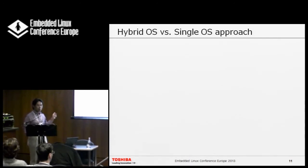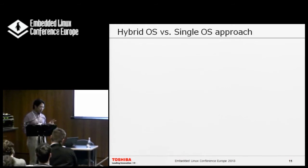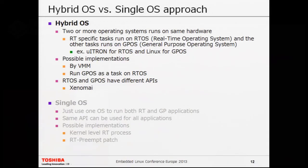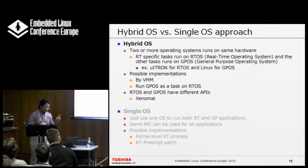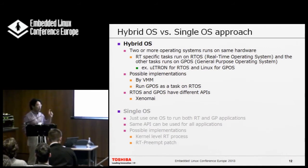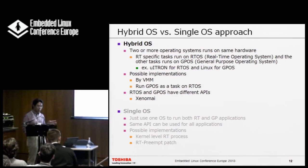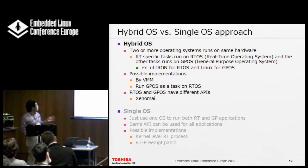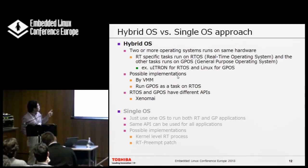We'd like to make it simpler — only one hardware able to control both real-time and general-purpose applications. The system software that can control both is either an operating system or a virtual machine monitor. There are two approaches: the hybrid OS approach and the single OS approach. In the hybrid OS approach, two or more operating systems run on the same hardware. One runs real-time specific tasks on a real-time OS, and general-purpose tasks run on a general-purpose OS. Currently we use MicroITRON for the real-time OS and Linux for general purpose.